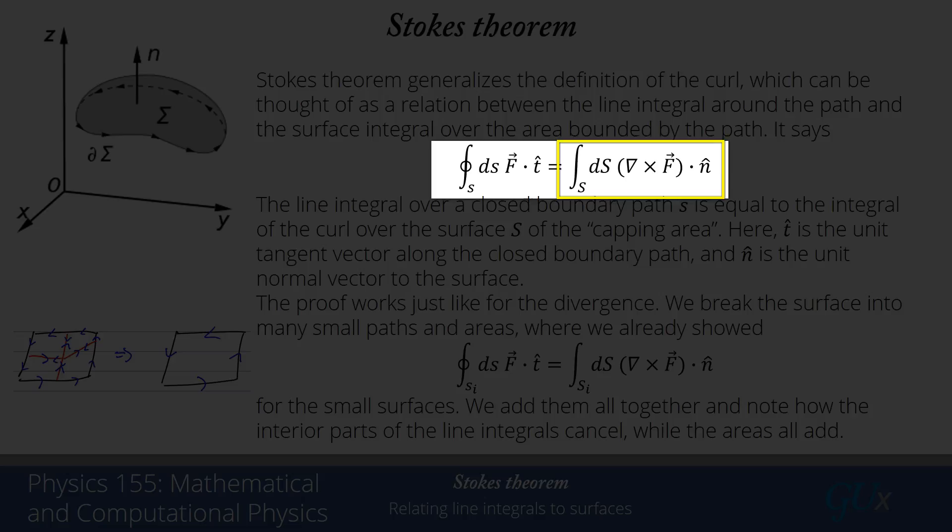Really, the only subtlety here, and the only part that we haven't shown in great detail, but you're going to have a homework problem that shows it, is the fact that when I multiply by the area, that corresponds to taking the dot product with this unit normal vector to the area multiplied by ds, and then we add up all those pieces together.